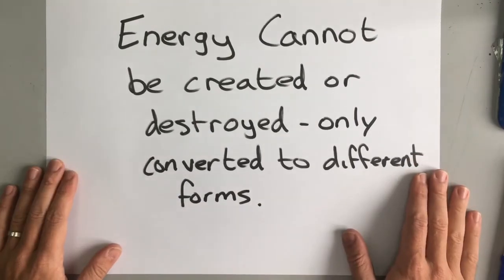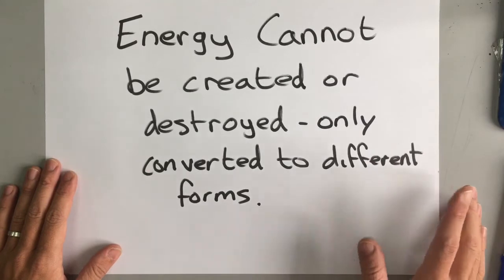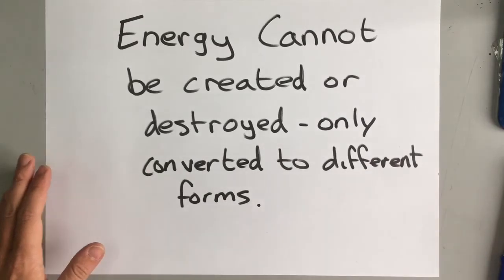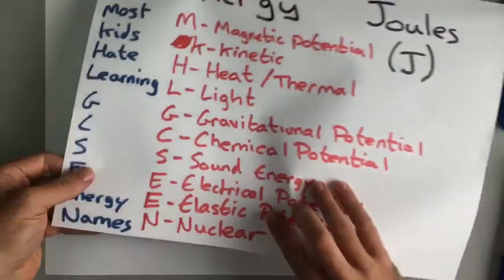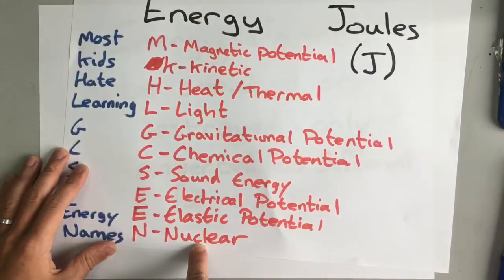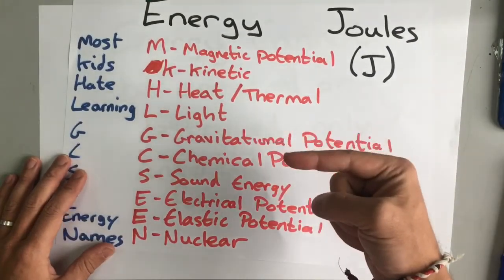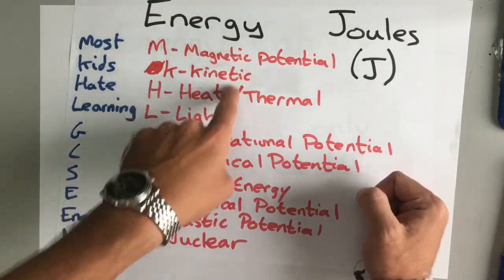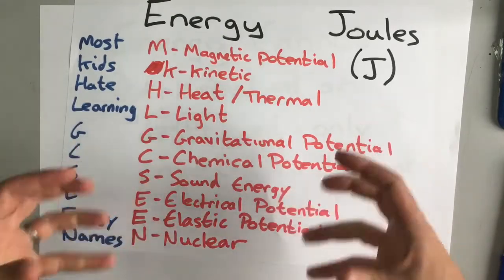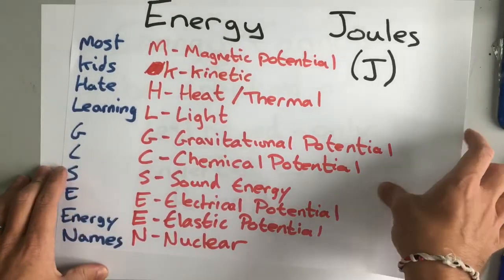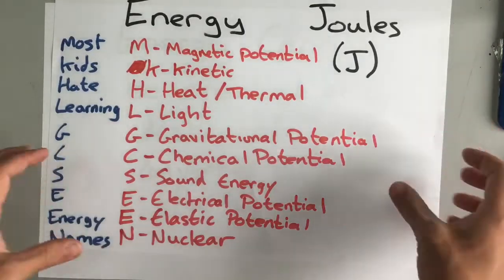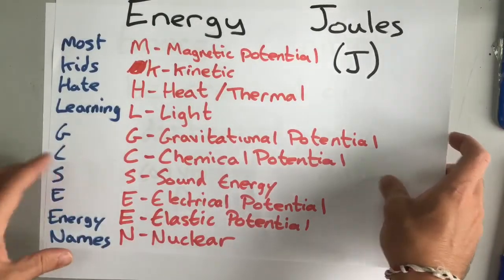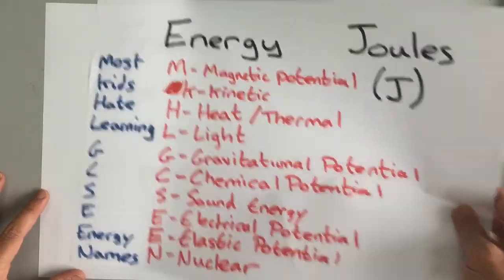And what's good to do at this stage is to look around you and see if you can see things and work out which of our ten energies is going into the device and which of the ten energies is coming out. Now usually there's more than one energy coming out—usually some of them are useful and some of them are wasted. And we're going to come on to that a little bit later when we're talking about efficiency.